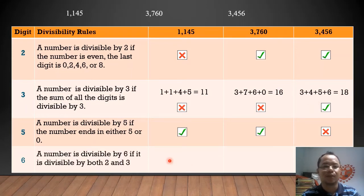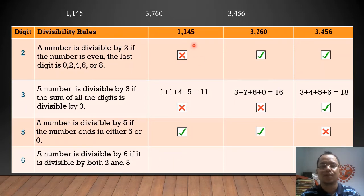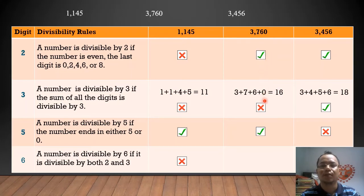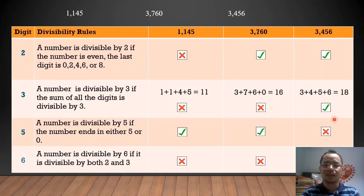A number is divisible by 6 if it is divisible by both 2 and 3. For 1,145: is it divisible by 2? No. Is it divisible by 3? No. Therefore, it is not divisible by 6. For 3,760: is it divisible by 2? Yes. Is it divisible by 3? No. Therefore, it is not divisible by 6. For 3,456: is it divisible by 2? Yes. Is it divisible by 3? Yes. Therefore, it is divisible by 6.